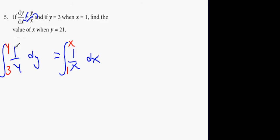Now, when you integrate 1 over y, you get? LN y, 3 to y, or so y to 3. So LN y, y and 3. And the other side's going to be, anybody? LN x. And that's going to be x and 1.